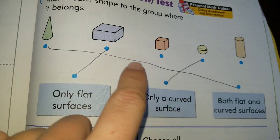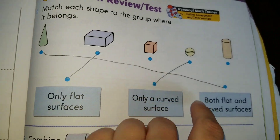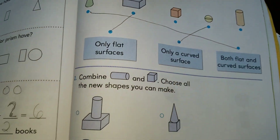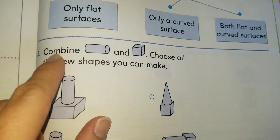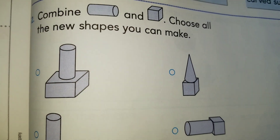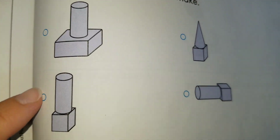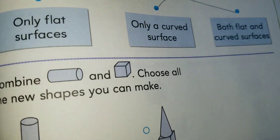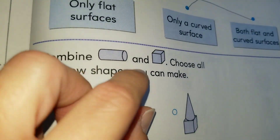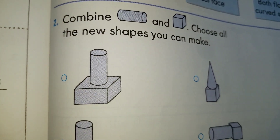Once again, which of these two shapes has both flat and curved surfaces? Alright boys and girls, moving on to our next one. It says combine a cylinder and a cube — choose all the new shapes you can make. You are going to bubble in the circles if you see those shapes in the more complex figures. If it has a cylinder and a cube, you bubble that shape in.